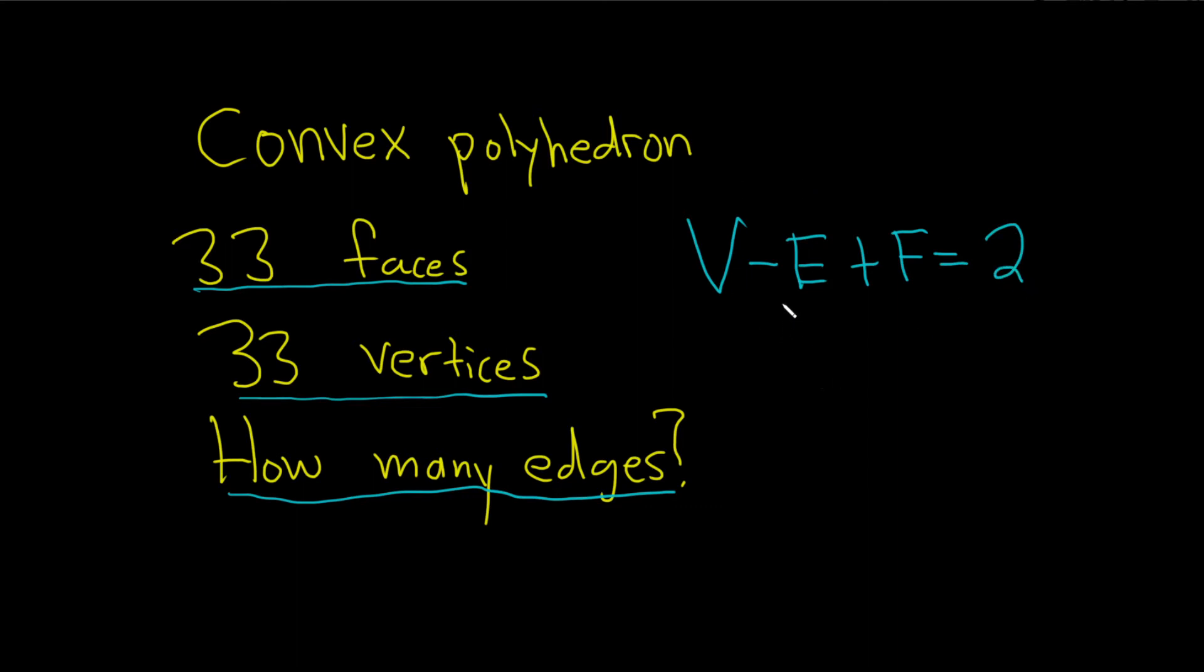So what do we have? We have the vertices, which is 33, so let's put 33 there for the V.